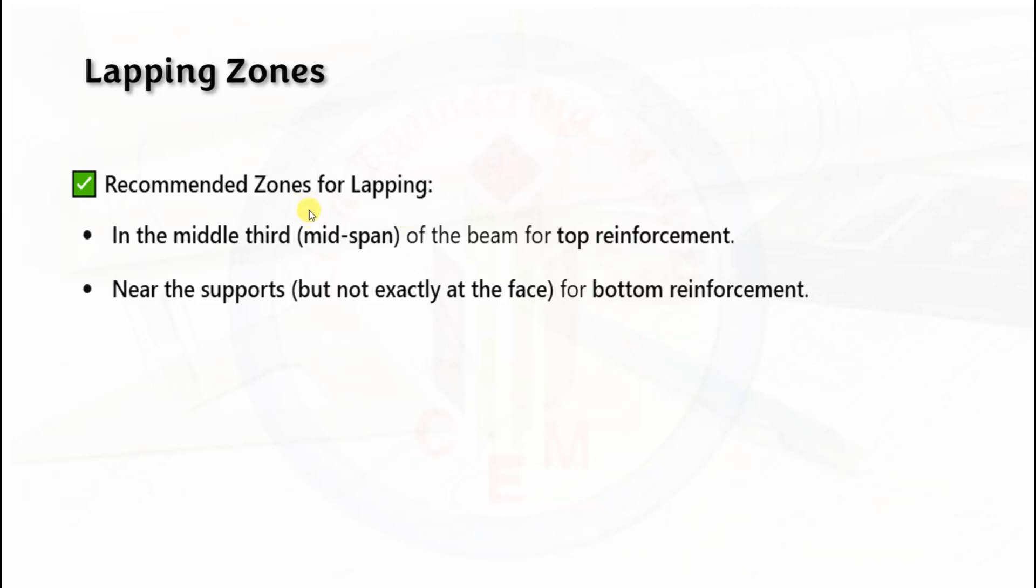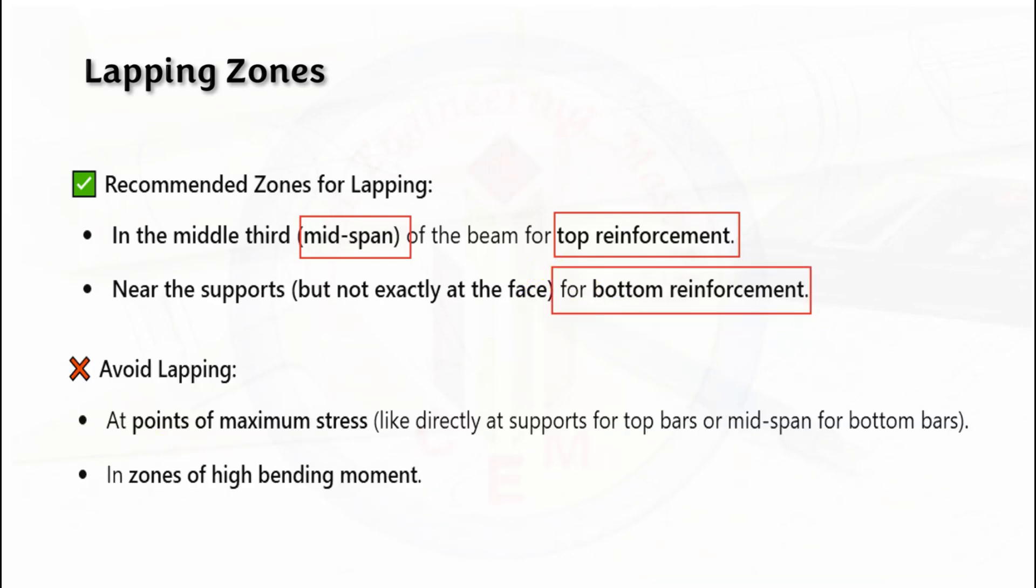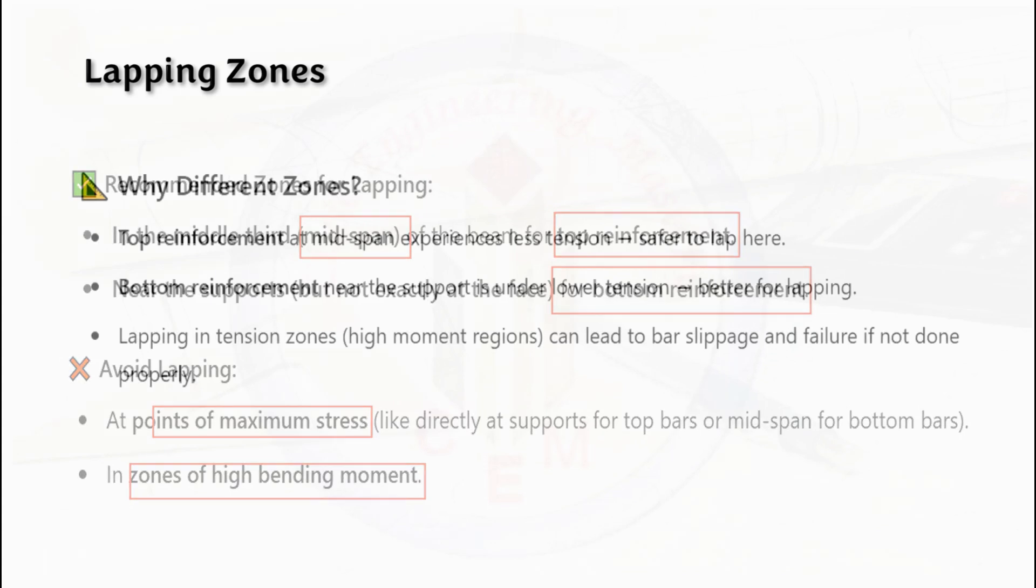The recommended zones for lapping: it is in the middle third or mid-span of the beam for top reinforcement, and near the support (not exactly at the face) for bottom reinforcement. The places where we have to avoid lapping are at the point of maximum stress and in zones of high bending moment.